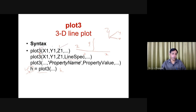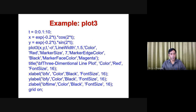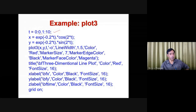Let's see an example. The t value goes from 0 to 10 with an increment of 0.1, creating a vector of points. X is equal to exp(-0.2 * t) multiplied by cos(2 * t). Since t is a vector, you use the dot operator for element-by-element multiplication.